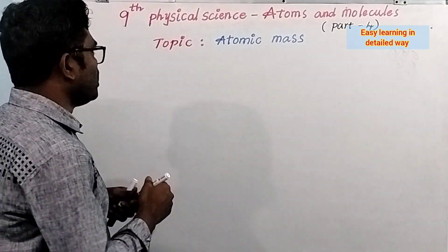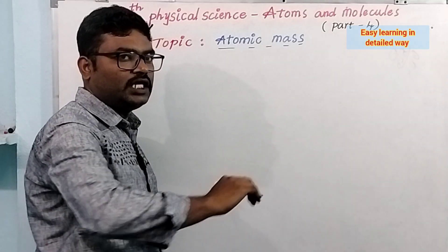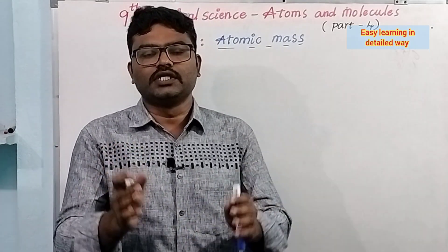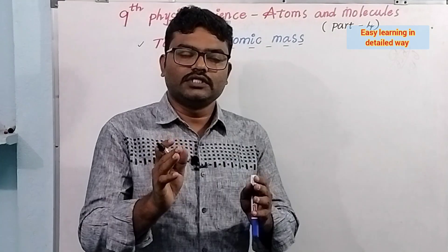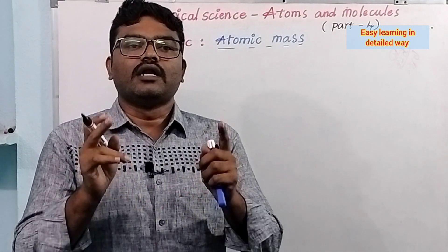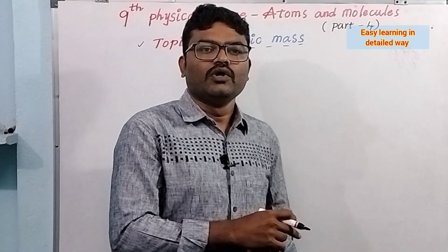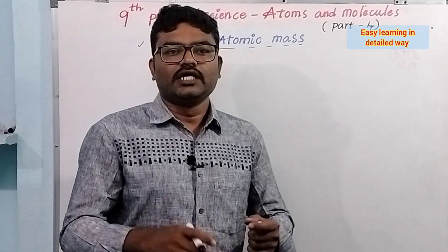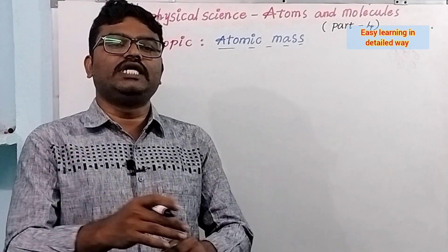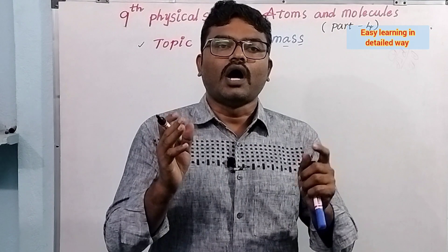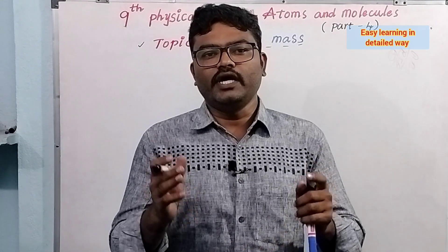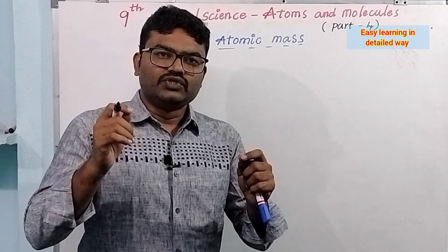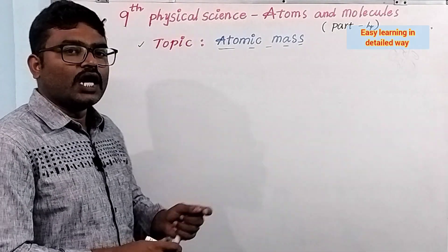See the topic here — that is atomic mass. So far in this chapter, we have discussed the law of chemical combinations, that is the law of conservation of mass and law of constant proportion. We also discussed Dalton's theory, a very important theory, and how big an atom is, and how to write symbols for a given element. These are the topics covered in our previous videos. In today's video, we are going to learn about atomic mass.